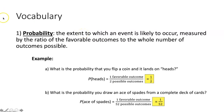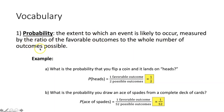First thing we do is review probability. Remember, that's the extent to which an event is likely to occur. It's measured by the ratio of the favorable outcomes — the outcomes that you want to happen — to the whole number of outcomes possible.